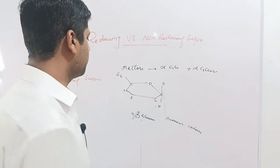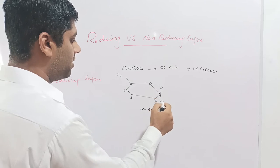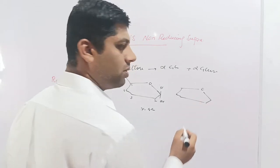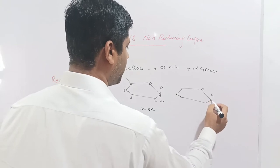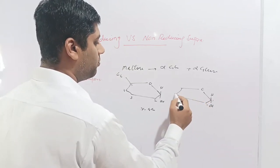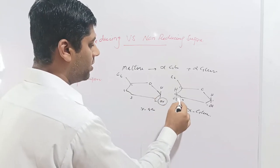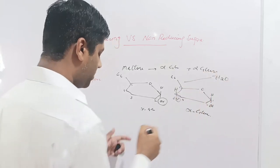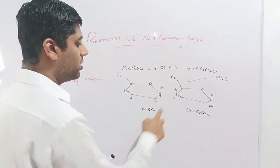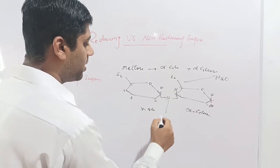We will now draw the diagram of maltose. The first glucose molecule is alpha glucose with hydrogen on the upper side and hydroxyl on the lower side. The second glucose molecule is also alpha, with hydrogen on the upper side and hydroxyl on the lower side of the first carbon, with carbons one through six. When these two glucose molecules join together, the hydroxyl of the first and hydrogen of the other combine, forming a water molecule that is ejected, leaving behind an oxygen atom. This oxygen atom forms a bridge — the oxygen bridge or glycosidic bond — between the two glucose molecules.